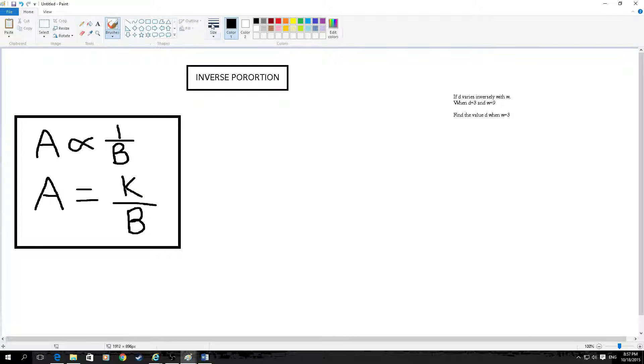You have a different formula used. Now instead you have k over B. Instead of timesing, so it's divided instead.